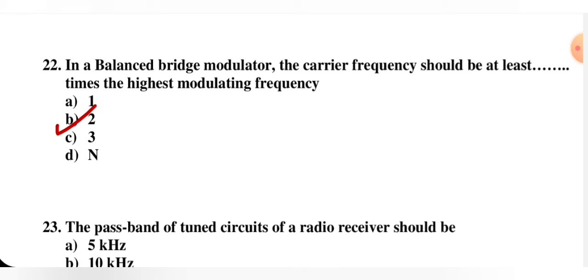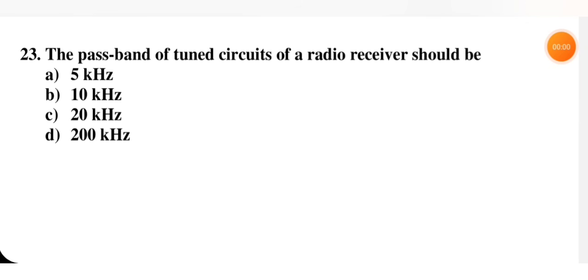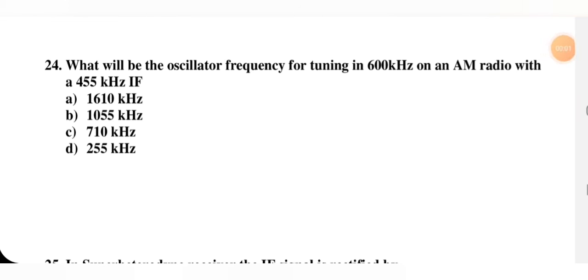Next question: the pass band of the tuned circuit of a radio receiver should be 5 kHz, 10 kHz, 20 kHz, or 200 kHz. The answer is 10 kHz — option B is correct.